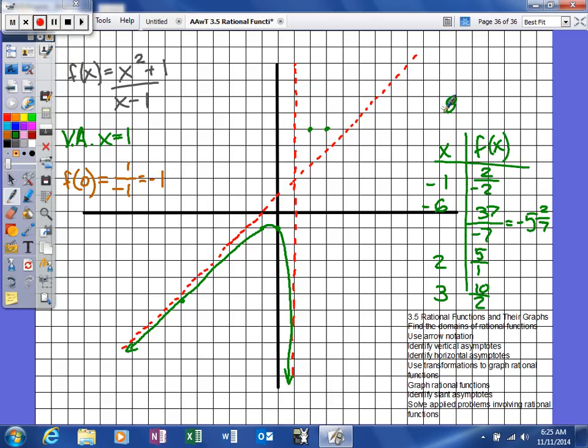If you plug in 8, it will give us 65 over 7. We divide those, you'll get 9 and then 2 sevenths, maybe.